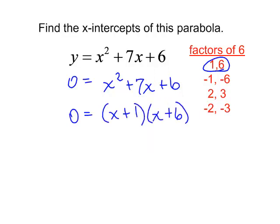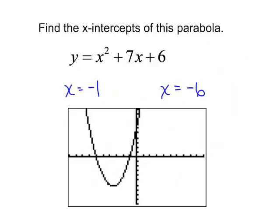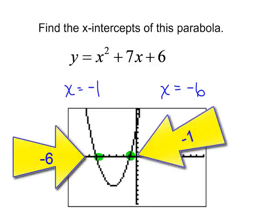I have two factors equal to zero, so one of them must be zero. X plus 1 equals zero, and x plus 6 equals zero. Solve each of these smaller equations. One of the x-intercepts will be negative 1, and the other x-intercept will be negative 6. And sure enough, when I typed it into my calculator, I do see that it crosses the x-axis at negative 1 and at negative 6.